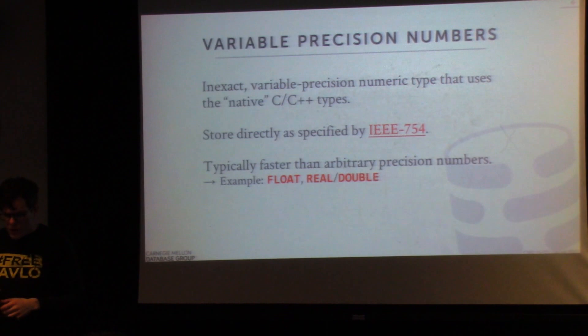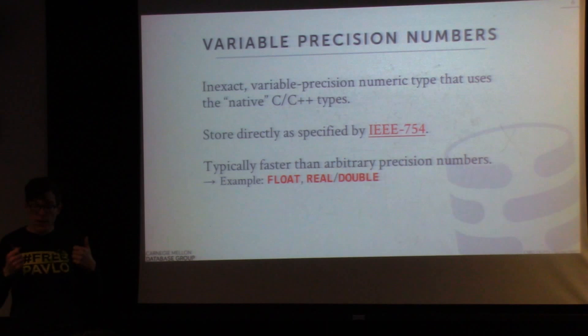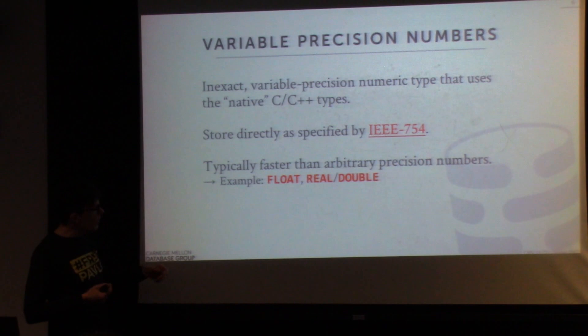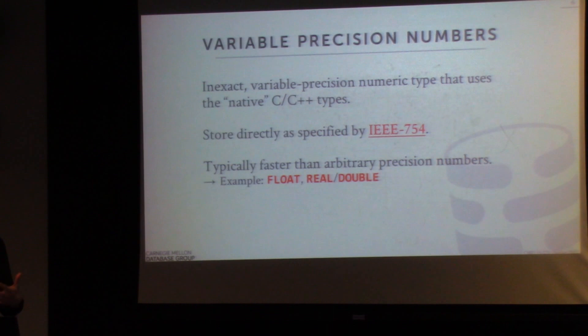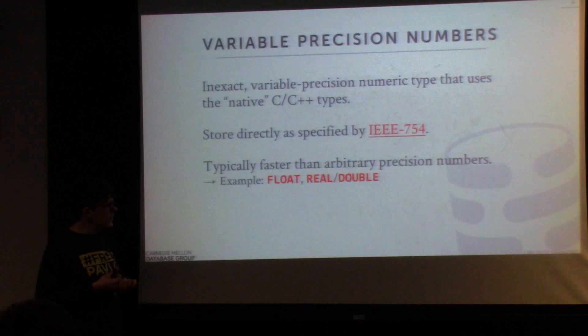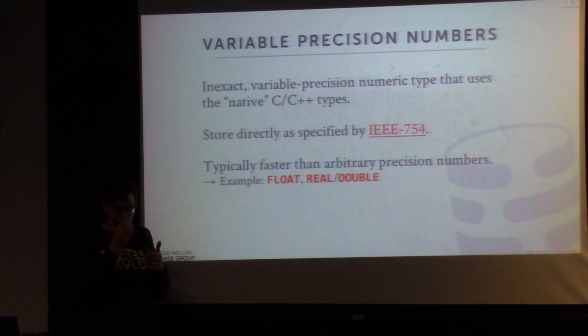Float and real types are inexact variable-precision floating-point numbers using native C or C++ data types, which map to the native types of the underlying CPU architecture. The way CPUs store these follows the IEEE 754 standard — a standard from a couple of decades ago describing exactly how floating-point numbers should be represented in hardware. These are much, much faster than arbitrary-precision numbers, but the downside is you get unexpected rounding errors, as some of you saw in the extract function.